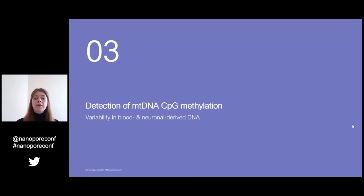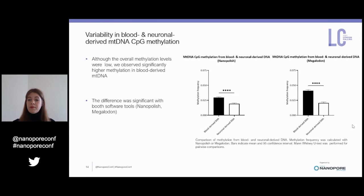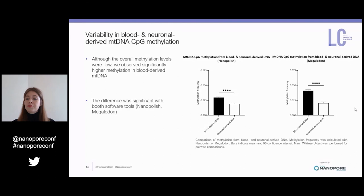With our corrected methylation data, we first explored variability in the two tissue types investigated. Although the overall methylation levels were low, we observed significantly higher methylation in the blood-derived mtDNA compared to the neuronal-derived mtDNA. The difference was significant with both Nanopolish and Megalodon and in the same direction. It was more pronounced in the Megalodon analysis, where we observed a mean methylation frequency of 0.04 in the blood-derived mtDNA compared to 0.02 in the neuronal-derived mtDNA.